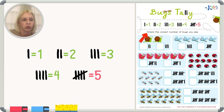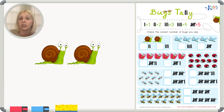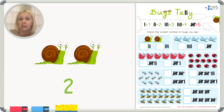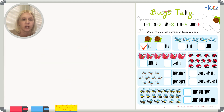Let's look at our worksheet. The directions say: check the correct number of bugs you see. I see some snails — let's count them: one, two. Now let's find the correct tally marks. This option shows one, two and this shows one, two, three. The correct answer is two, because we have one, two snails. That was pretty easy!